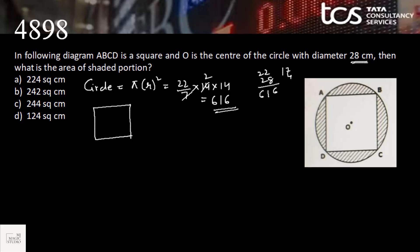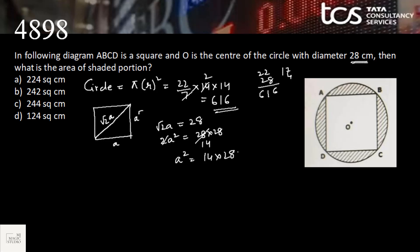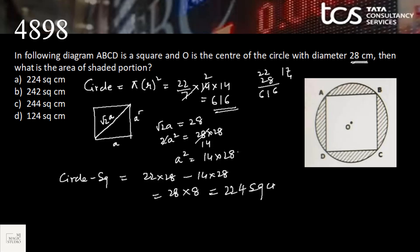In the square, the diameter of the circle is the diagonal of the square. If the sides of the square are A, then the diagonal is √2·A. Setting √2·A = 28 gives 2A² = 28 × 28, so A² = 14 × 28 = 392. The area of the shaded portion is area of circle minus area of square: (22 × 28) − (14 × 28) = 28 × (22 − 14) = 28 × 8 = 224 square centimeters. Option A is the answer.